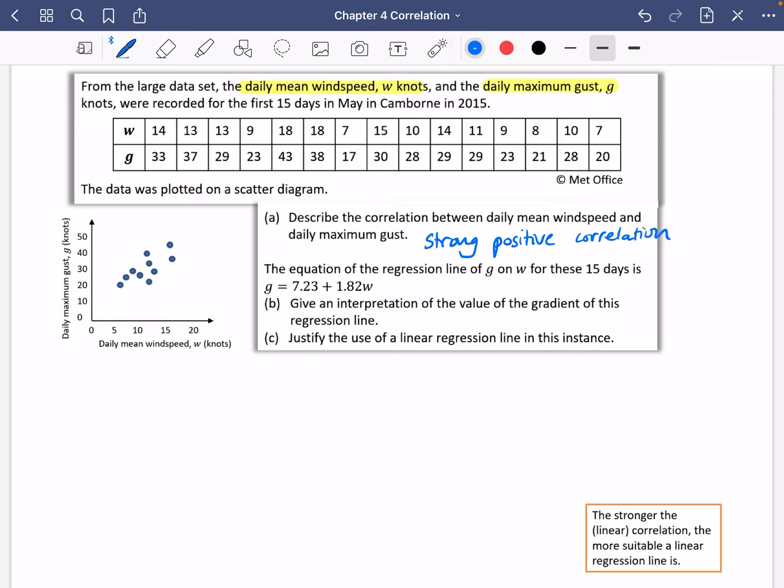If I was going to interpret this, if it said interpret, then I would say that maybe we should say this strong positive correlation. It's describing this. So I'm going to make it extra clear. Let's say for part A of the question, the higher the mean wind speed, the higher the daily maximum gust. Now, I'm not sure it needed that because it was asking you to describe the correlation, but I thought I'd interpret it as well, just to make sure that we get that extra mark.